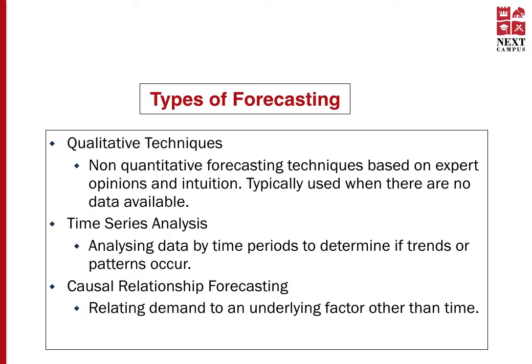There are three categories of forecasting types. The first are qualitative techniques. The second is quantitative time series analysis. The third is quantitative causal relationship forecasting. Qualitative techniques are generally non-quantitative, typically used when there are insufficient data available to do proper quantitative analysis. We will be discussing more on these types of forecasting in the next slides.